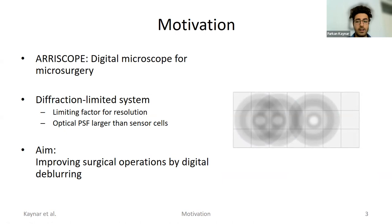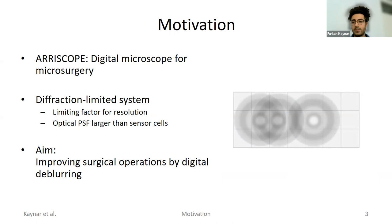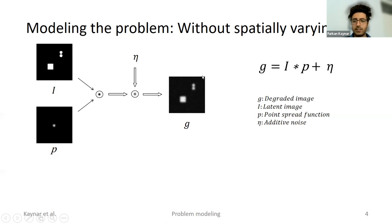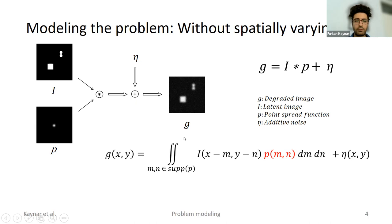In our work, we improve the image by de-blurring it, with the aim of improving surgical operations in general. We model this image blurring — or image degradation — as follows: we have a latent image I which we want to estimate, a point spread function P which is convolved with the image, and additive noise. The degraded image G that we observe is given by this convolution-plus-noise expression. Our aim is obtaining I-hat — the estimated clean image.